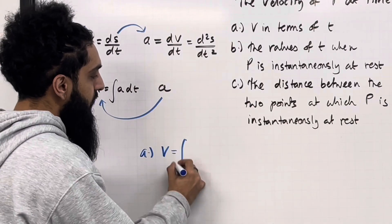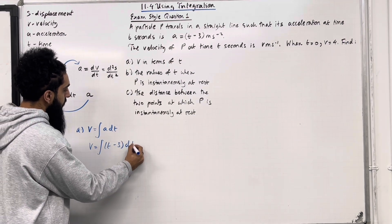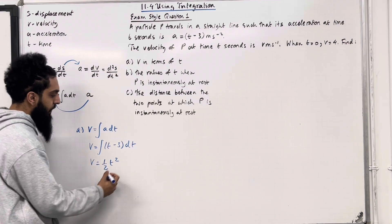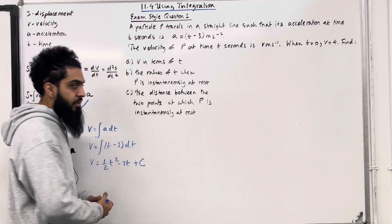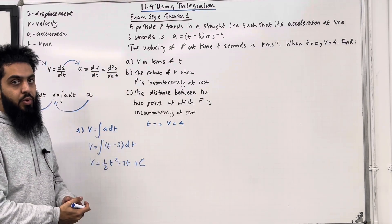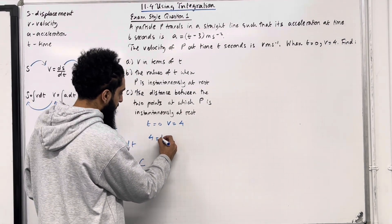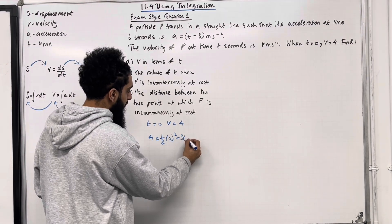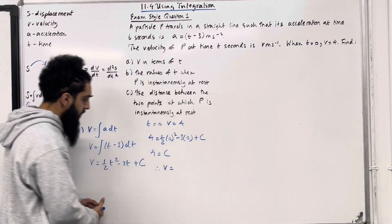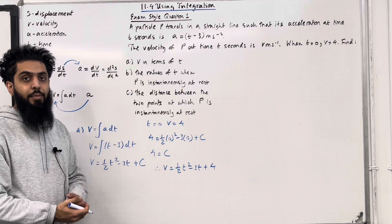To work out the velocity, we have to integrate the acceleration with respect to T. So we are integrating (T − 3) with respect to T, term by term. Integrating T gives ½T², and integrating −3 gives −3T, plus C, the constant of integration. The question states that when T = 0, V = 4 — these are the boundary conditions. Substituting: 4 = ½(0)² − 3(0) + C, so C = 4. Therefore, the velocity equation is V = ½T² − 3T + 4.